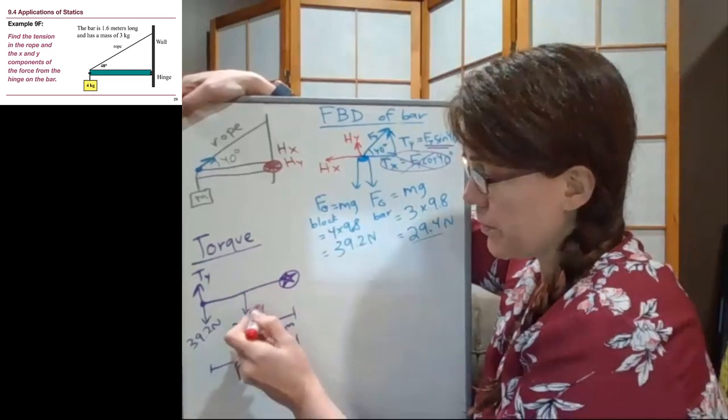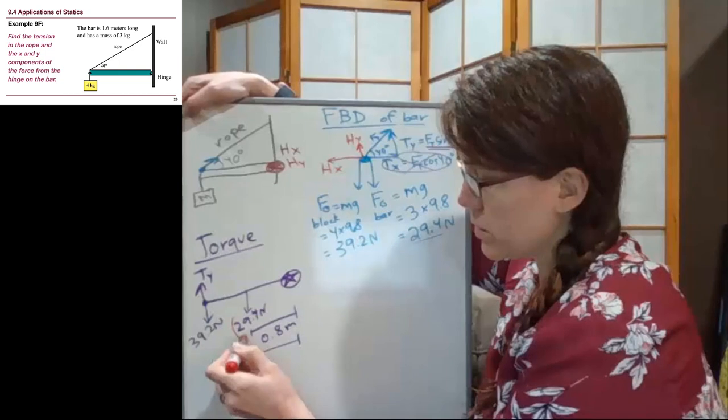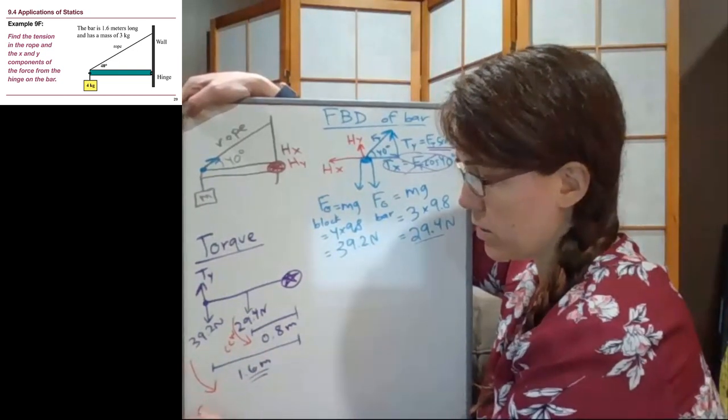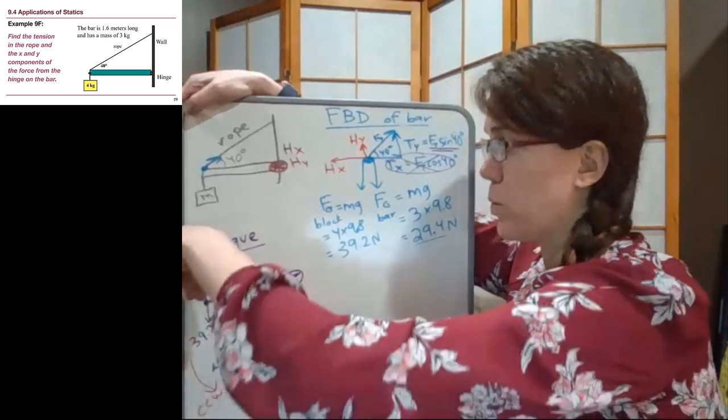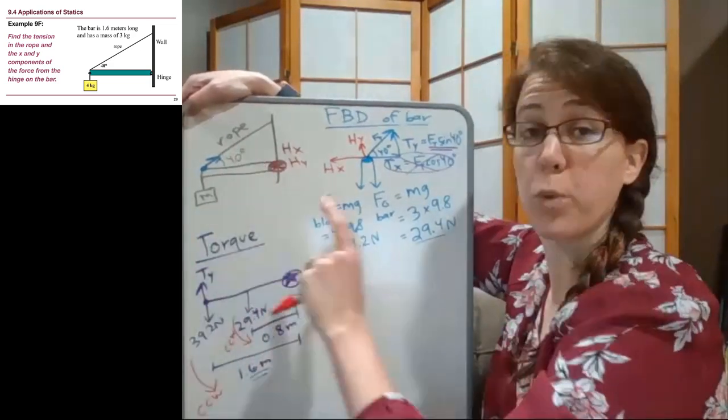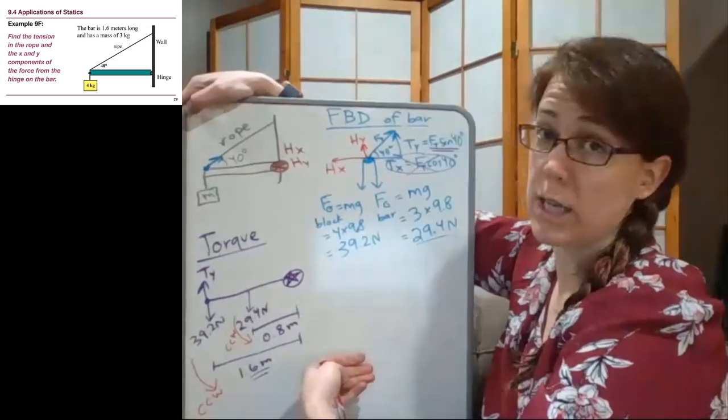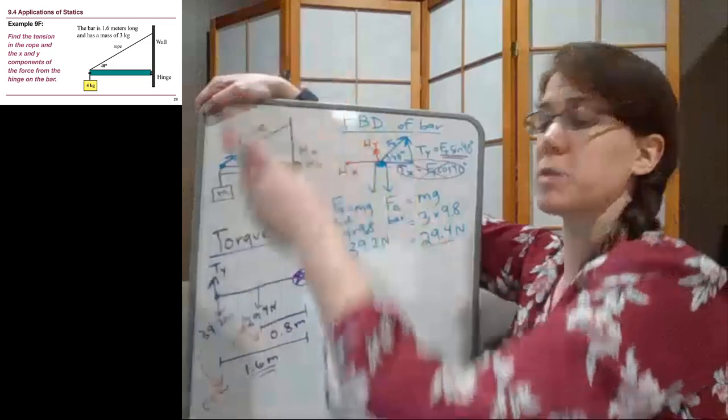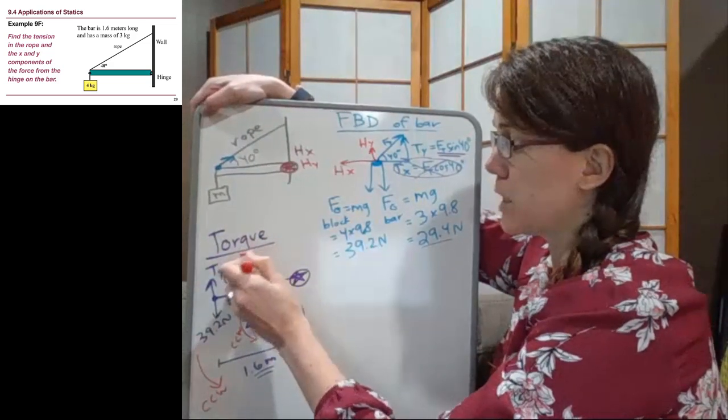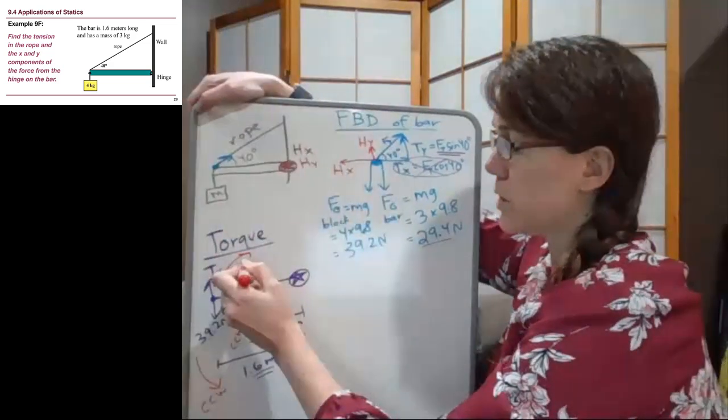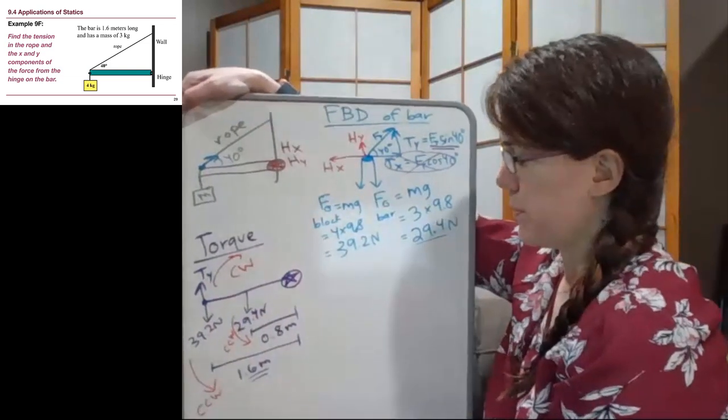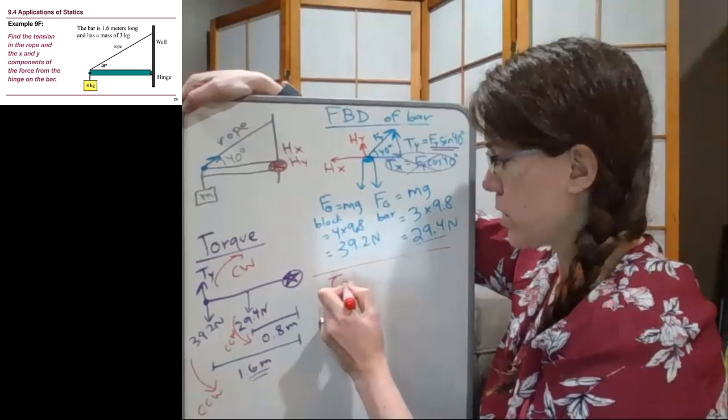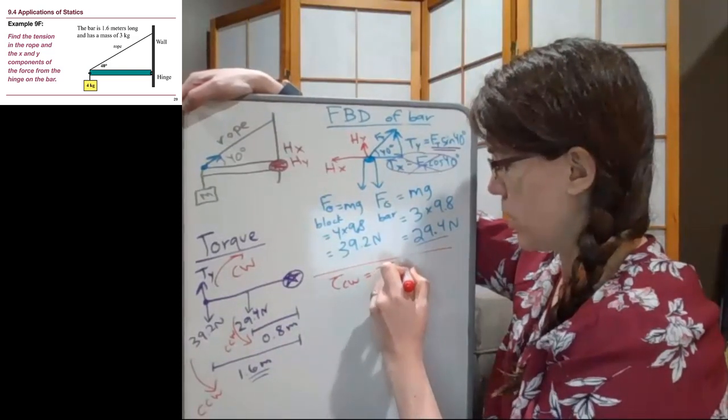With our axis here, this 29.4 Newtons is causing counterclockwise rotation. This 39.2 Newtons is causing counterclockwise rotation as well. Both of those things, if the rope were cut, the bar would rotate counterclockwise. And if somebody tugged on the rope to make it a bigger tension than it currently is, that bar would swing upwards and we would have clockwise rotation.